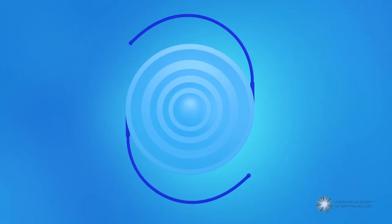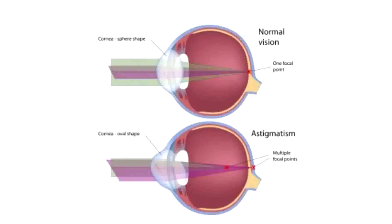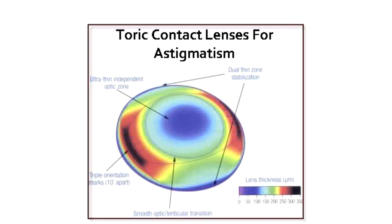A fifth type are toric IOLs. Toric IOLs are specifically designed to correct astigmatism, which is a common refractive error. They have different powers in different meridians of the lens, allowing for astigmatism correction during cataract surgery. Both monofocal and multifocal IOLs can be offered in toric versions.